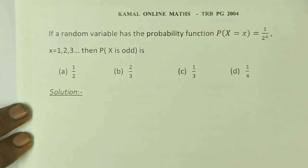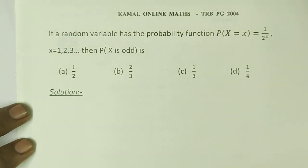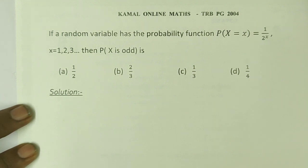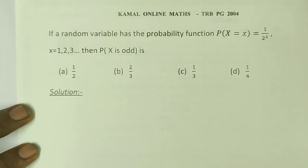Welcome. This is one statistics question. If a random variable has the probability function p(x) = (1/2)^x, for x = 1, 2, 3, etc., then find the probability that x is odd.